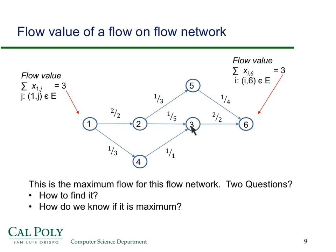There's one unit of flow coming in from 4, one unit of flow coming in from 2 to vertex 3, and two units (1 plus 1) flowing out of 3 into 6. The flow value of this is how much is coming out of the source, which is 2 plus 1 equals 3, and how much is flowing into the sink, which is 1 plus 2.